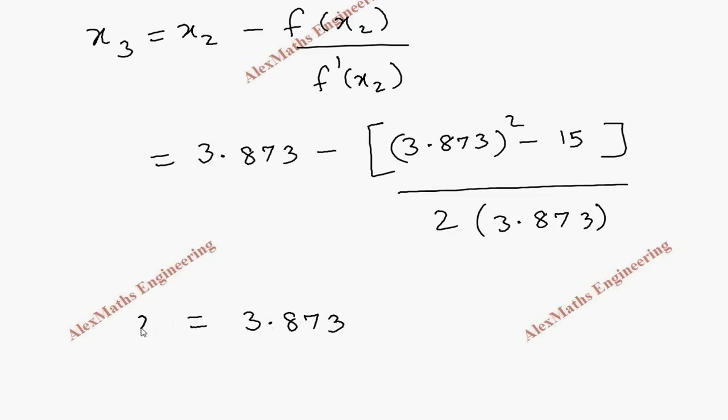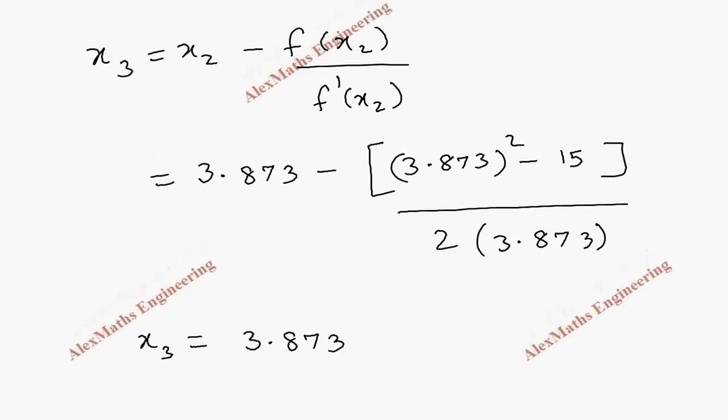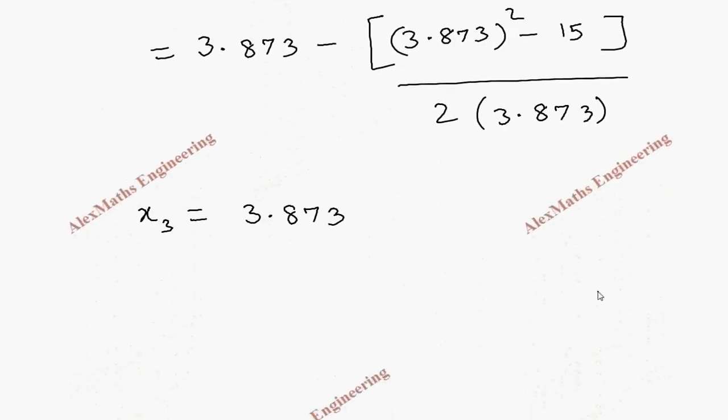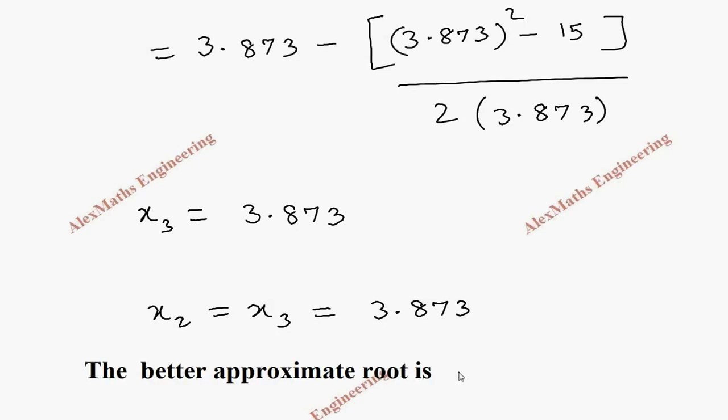We got x3 value and x2 value as same 3.873. So, x2 equal to x3 equal to 3.873. So, we can say the better approximate root is 3.873.